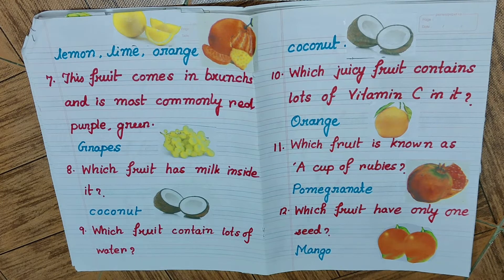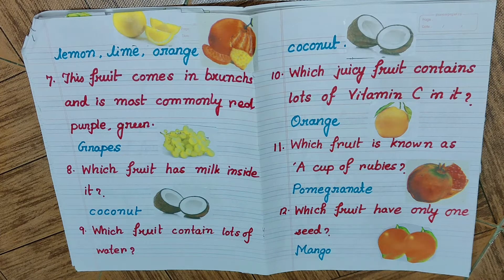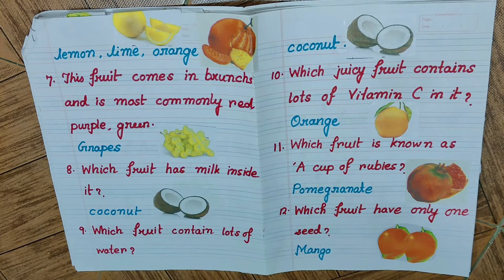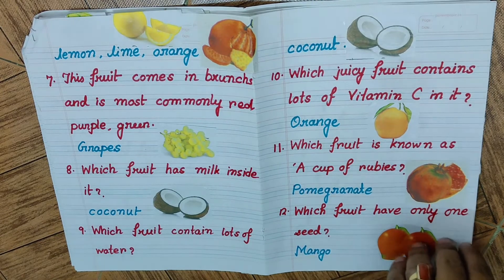Question number eleven: which fruit is known as a cup of rubies? We are talking about pomegranate. If you open up a pomegranate, you will see small beads of red juicy fruit inside it, and those are commonly called a cup of rubies. Question number twelve: which fruit has only one seed? The answer is mango — mango has only one big seed.